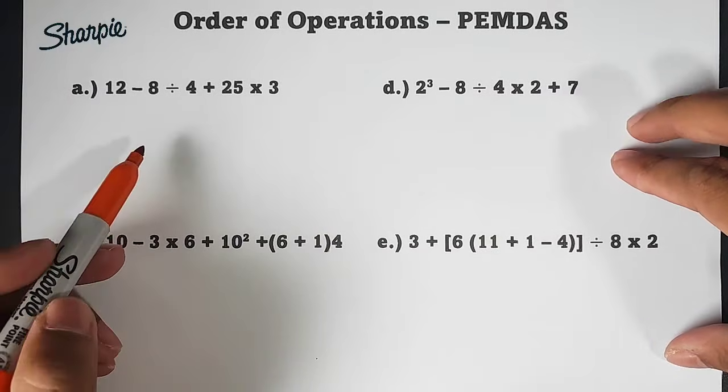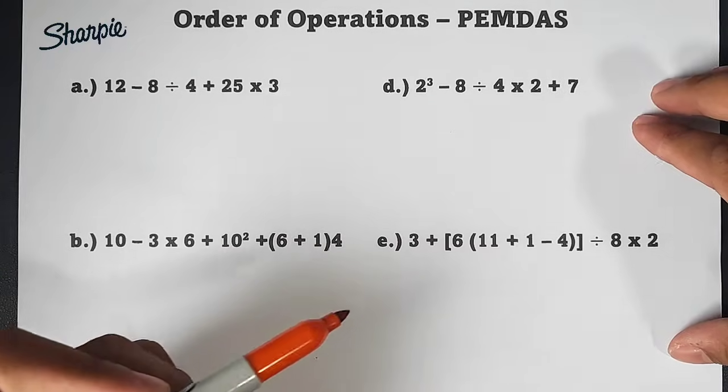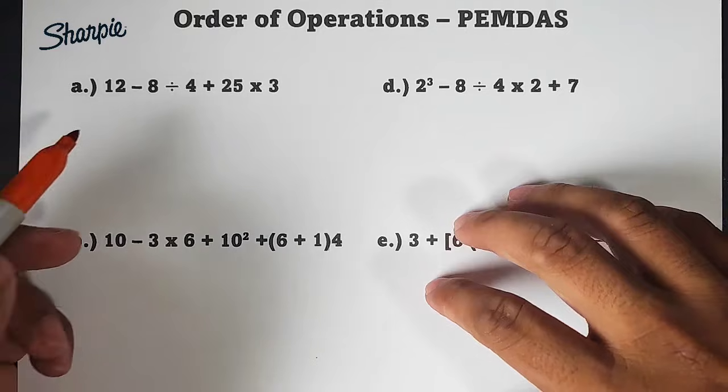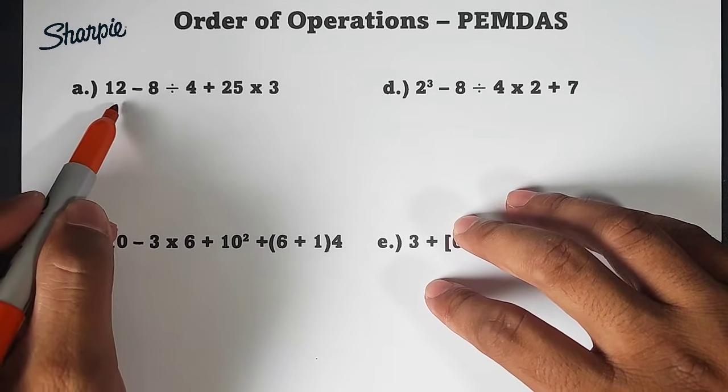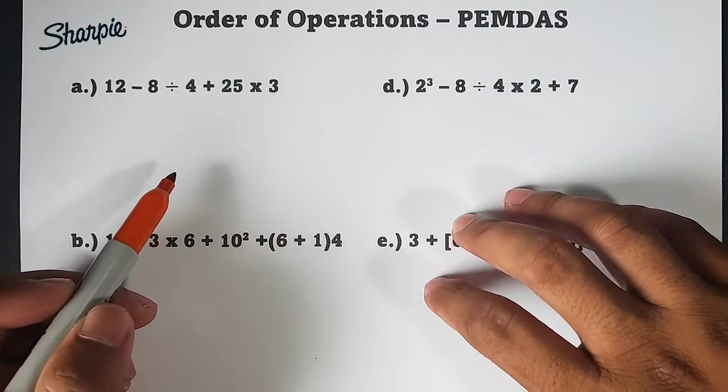We have here four different examples, A, B, D, and E, wherein we will try to do order of operations and simplify these expressions using PEMDAS. So without further ado, let's do this topic. In number one, or the first example, which is letter A, we have 12 minus 8 divided by 4 plus 25 times 3.